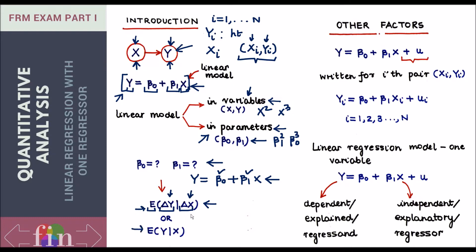The second question you can answer is this: if I have fitted this model based on a class of 50 students and tomorrow a new student joins who hasn't arrived yet, if I give you the height of this new student's father, the equation on average would help you find the expected height of the student without you having even met them. These are the two very practical questions which this linear model can address once we have accurately set the two parameters.